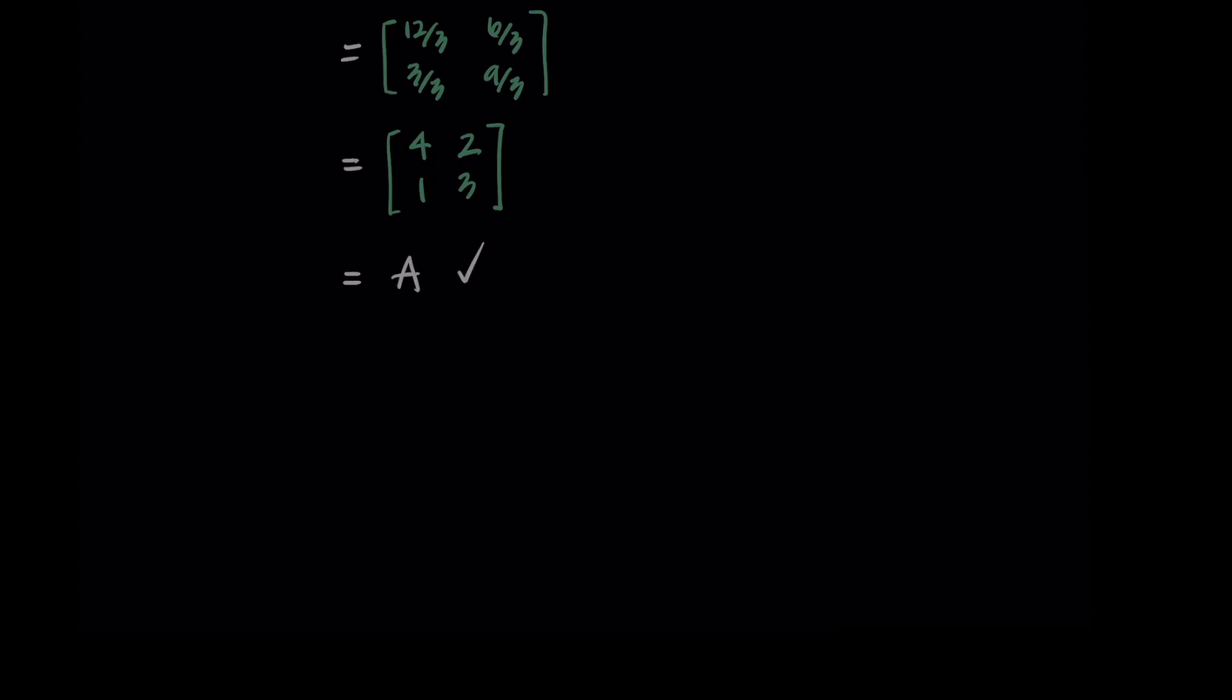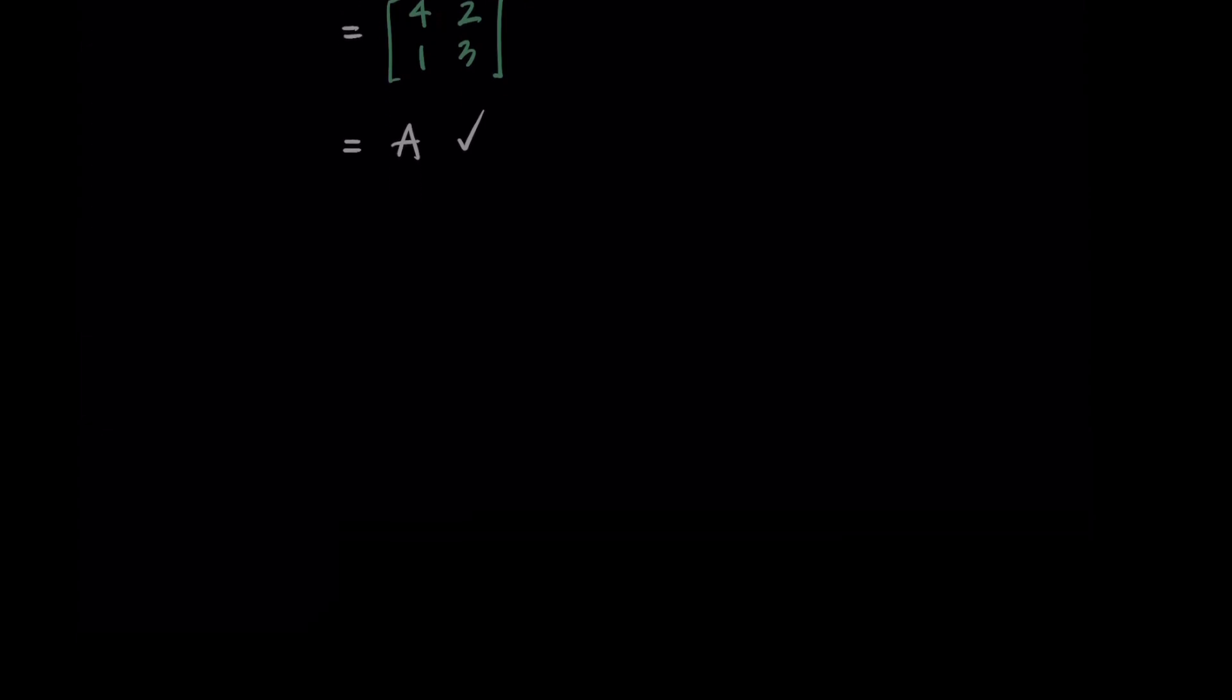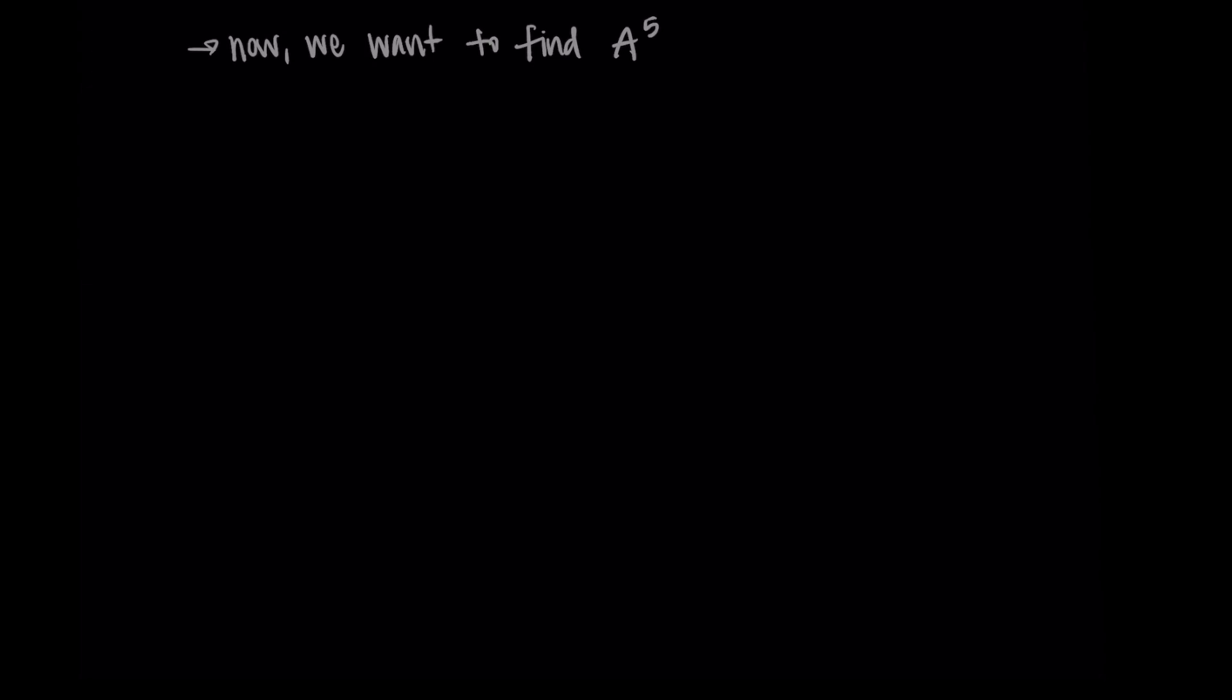What this shows is that we can write A, we can basically decompose it into this P times D times P inverse. The special part here is that that D matrix is diagonal, where the only elements that are non-zero are on the diagonal. To wrap this up, we're going to find A to the fifth power just to show how this can be useful. Instead of taking A and multiplying it by itself five times, we're going to do PDP inverse to the fifth power, which is the same as finding P times D to the fifth power times P inverse.